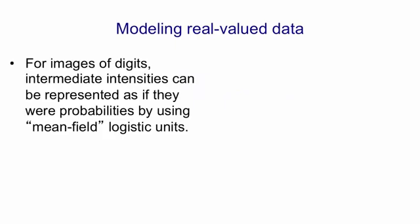We first used restricted Boltzmann machines with images of handwritten digits. For those images, intermediate intensities caused by a pixel being only partially inked can be modeled quite well by probabilities.